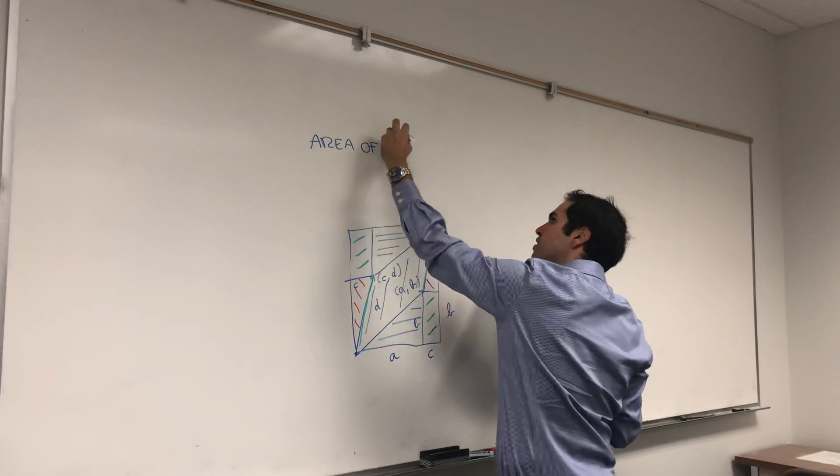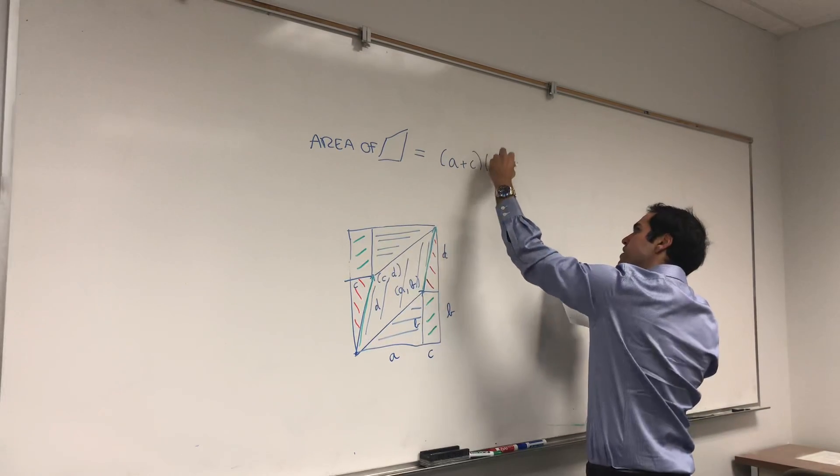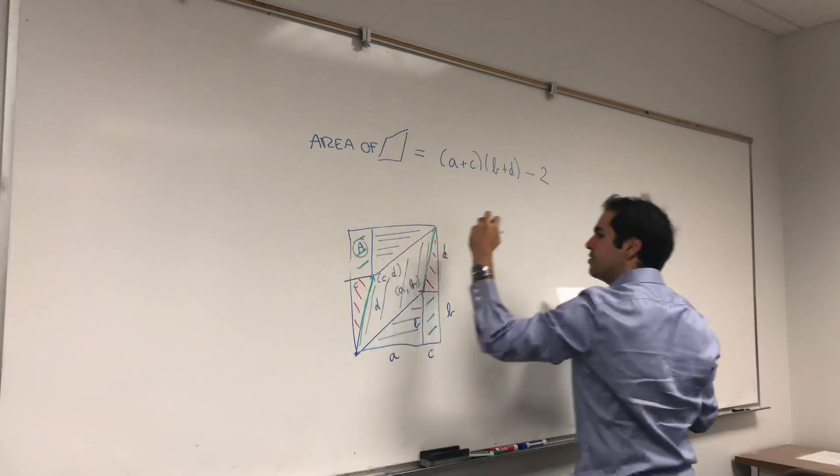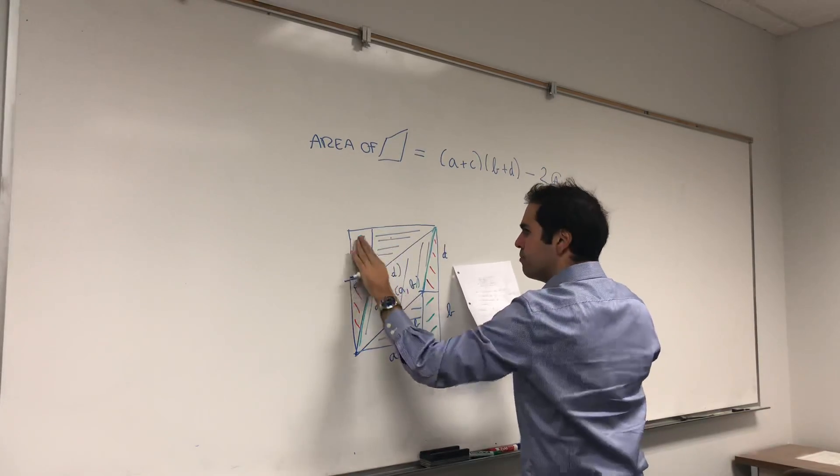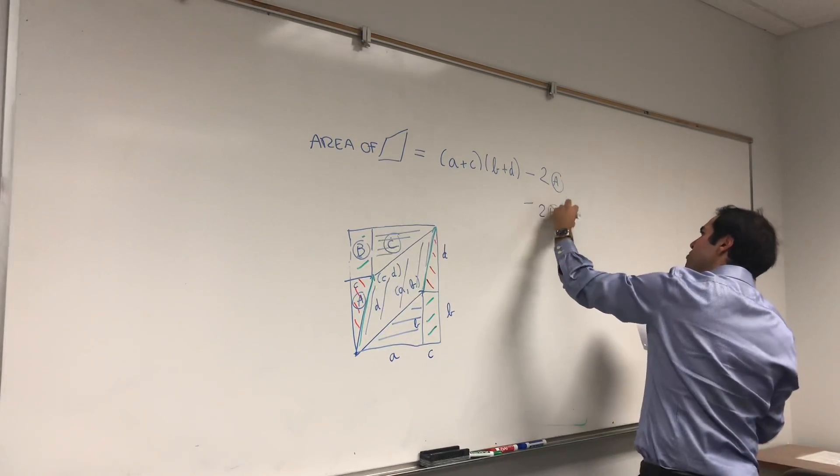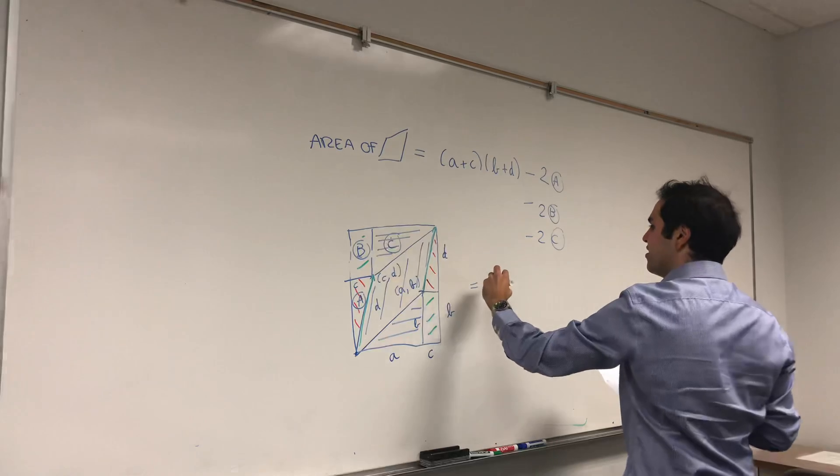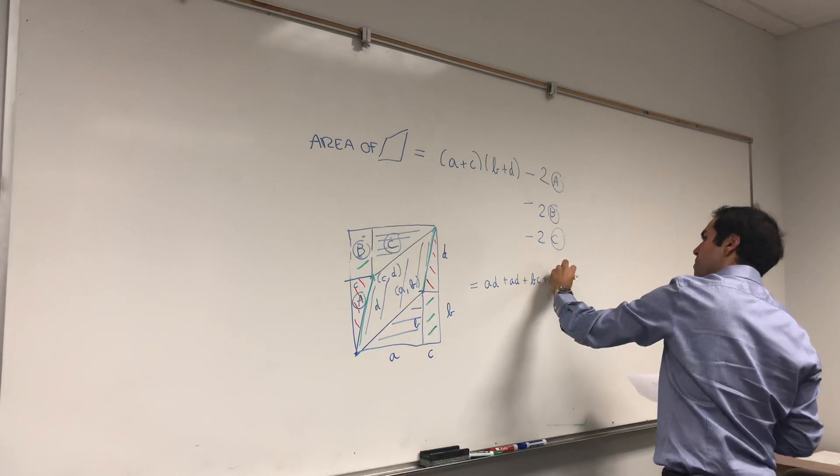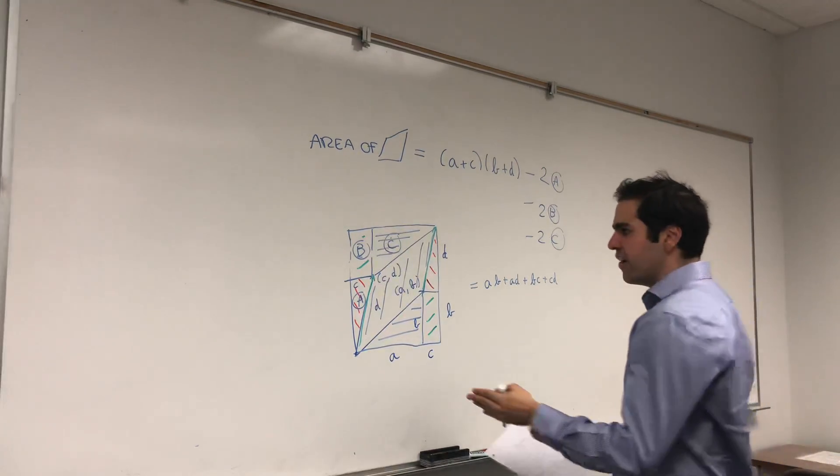And in particular, let's see, the area of the parallelogram. So area of this thing, it equals A plus C times B plus D minus two times, let's call this area A, so two A minus two times, let's call this area B. Sorry, no, so that I'm clear with this: A, B, and C. Let's call that. So minus 2A, minus 2B, minus 2C. What is that equal to? Well, let's call this out. So AB plus AD plus BC plus CD.